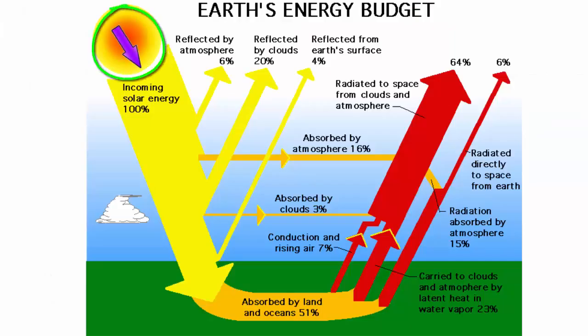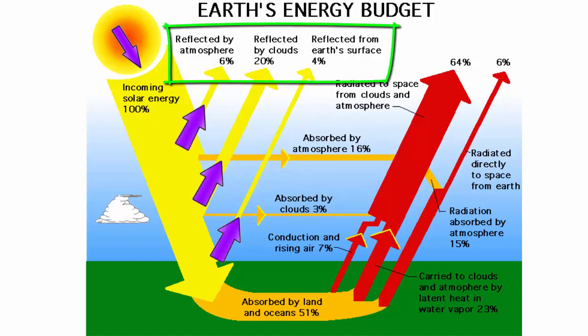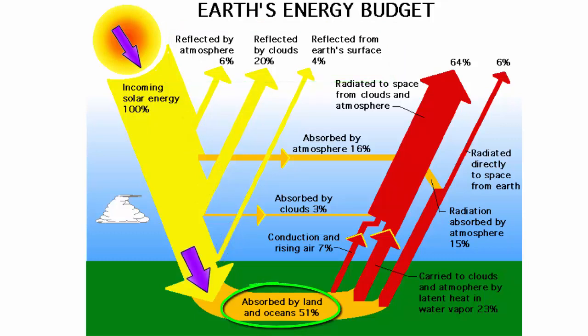For every 100 units of heat that radiate towards a particular area of Earth's surface, 16% are absorbed by the atmosphere, specifically by the area known as the ozone layer. This layer absorbs mostly the UV radiation. 30% of the incoming radiation is reflected right back to space, most from the upper atmosphere, a small amount from the surface. 51% of the incoming radiation is absorbed at the surface, which raises the temperature of the surface.